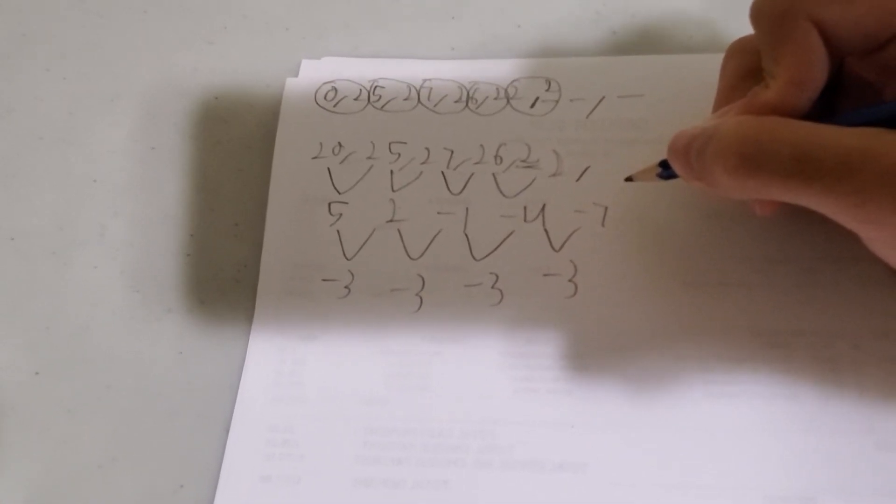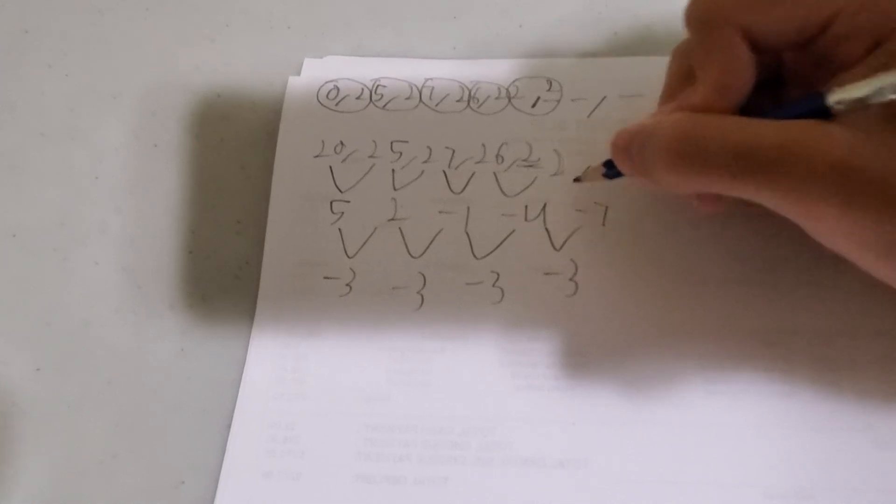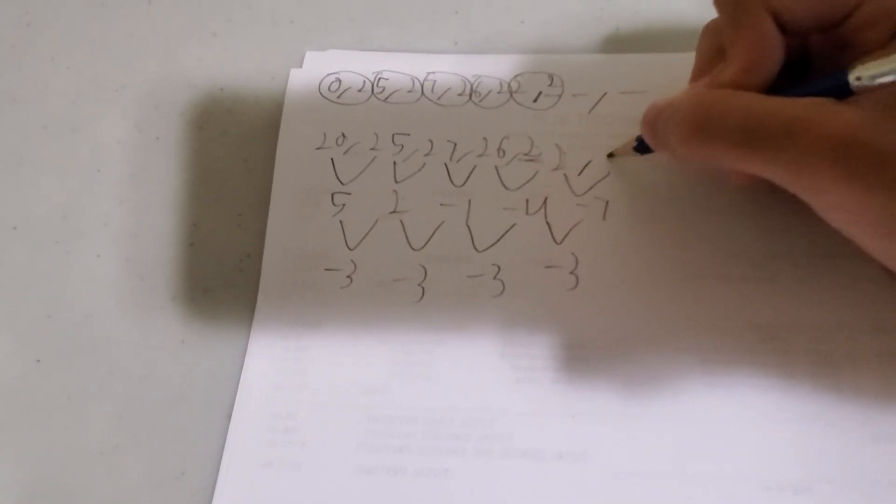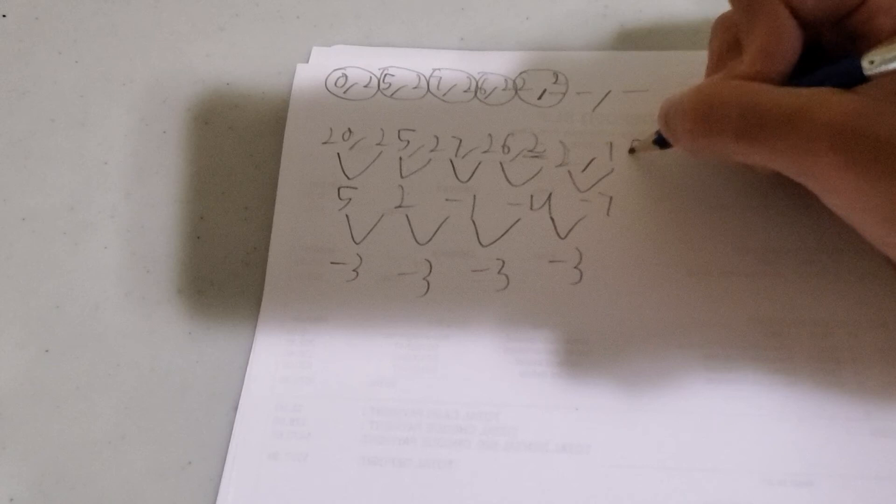And 22 minus 7 is 15. That should do it.